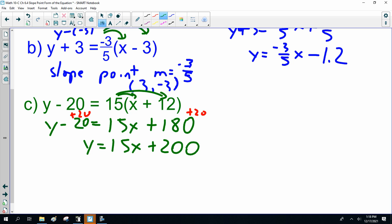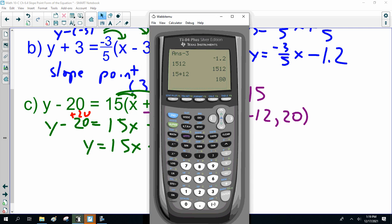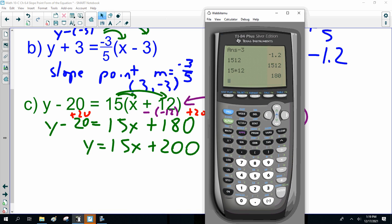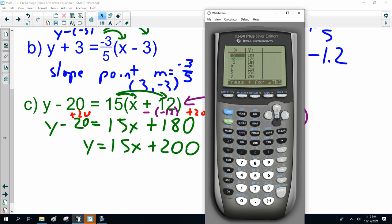Now, notice this graph here. M is 15, and the point it goes through is minus 12 comma 20. So, y equals 15x plus 200. Now, here's the problem. If I try graphing that, I don't see the graph because my window isn't big enough. I look at my table of values, and I go, when x is 0, y is 200.